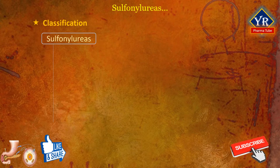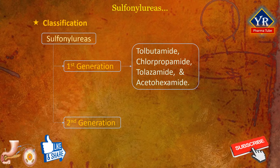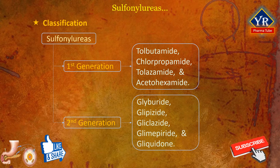Sulfonylureas are classified into first and second generation drugs. Tolbutamide, chlorpropamide, tolazamide, and acetohexamide formed the first generation of orally active hypoglycemic agents. Glybenclamide i.e. gliburide, glipizide, gliklazide, glimepiride, and gliquidone are among the second generation hypoglycemic sulfonylureas.